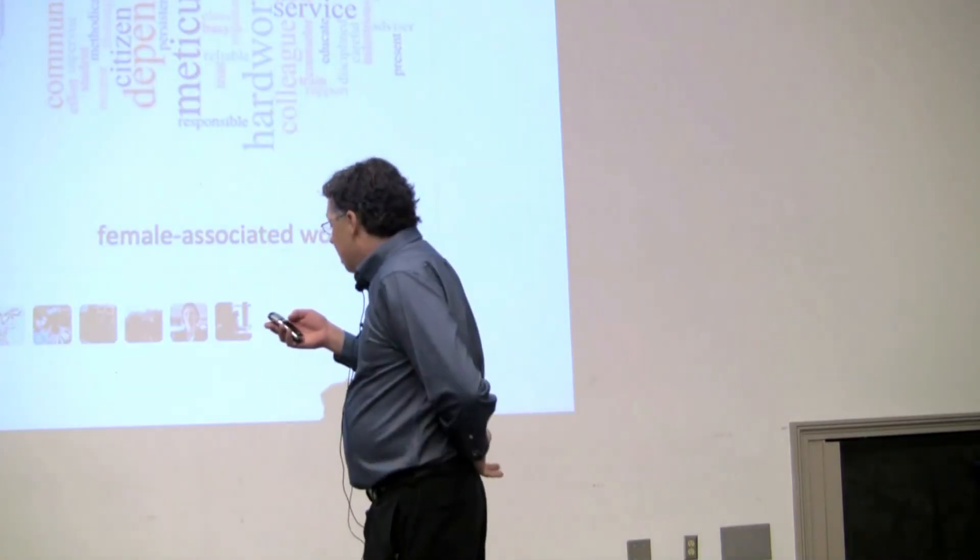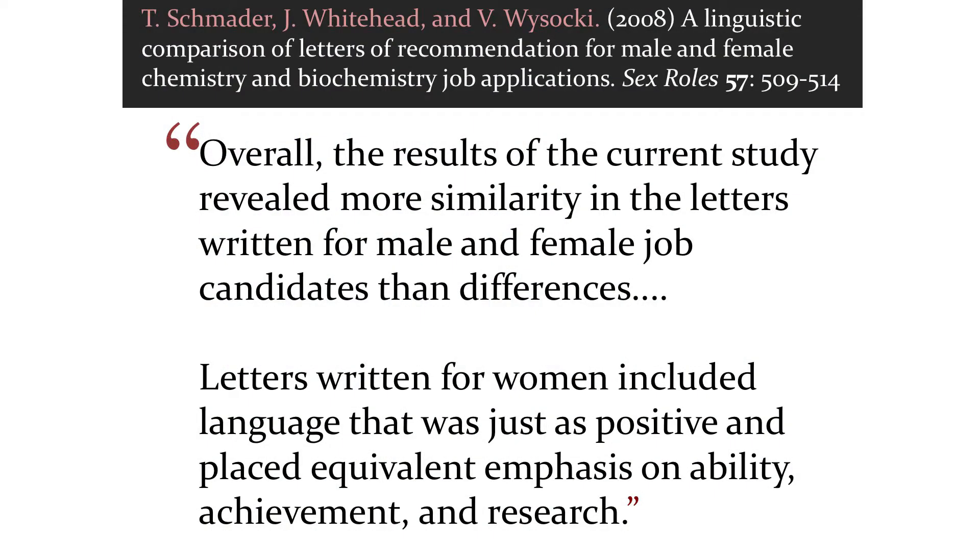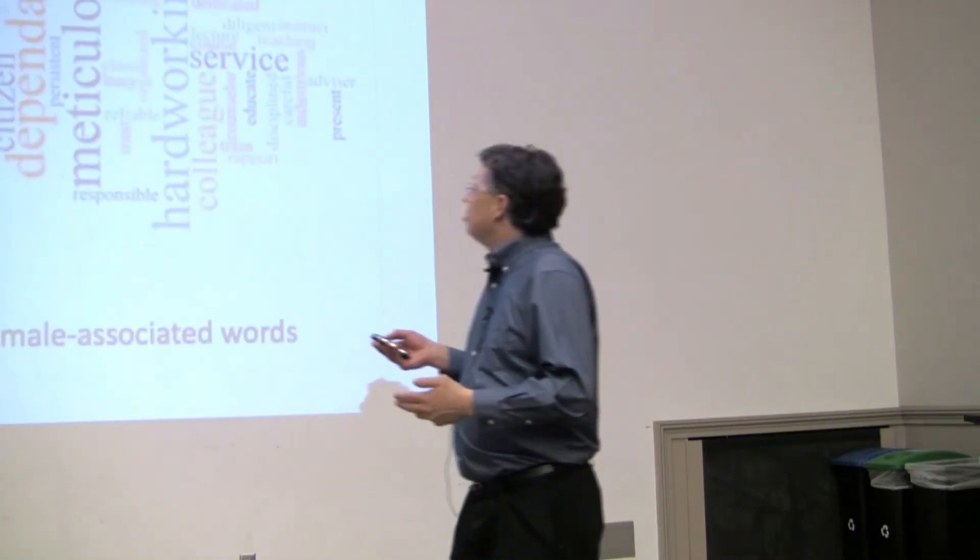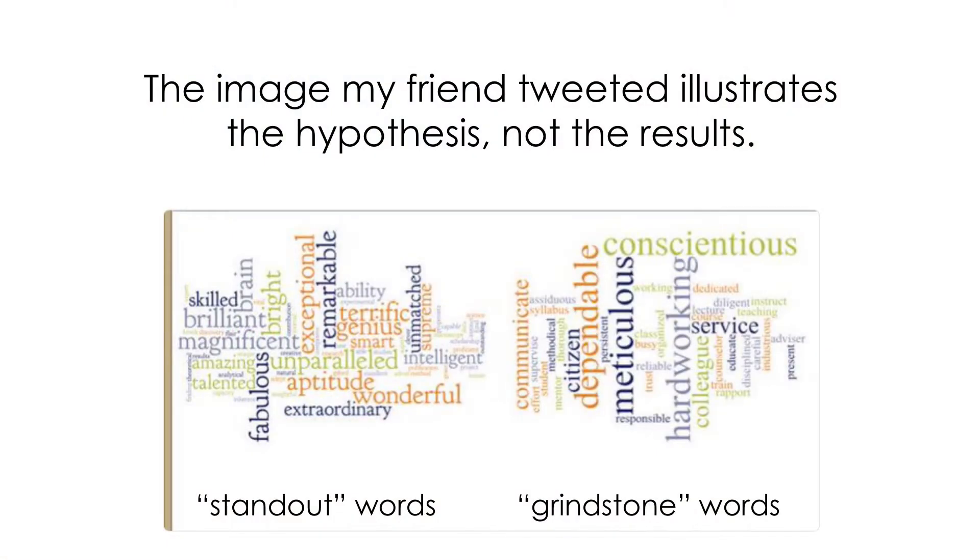And so I went to the original paper. Here's the original paper that he links to with the tweet. Paper says, overall, the results of the current study revealed more similarity in the letters written for male and female job candidates than differences. Letters written for women included language that was just as positive and placed equivalent emphasis on ability, achievement, and research. So the paper's conclusions are exactly opposite of my friend's tweet. That's interesting. So how did that possibly happen?